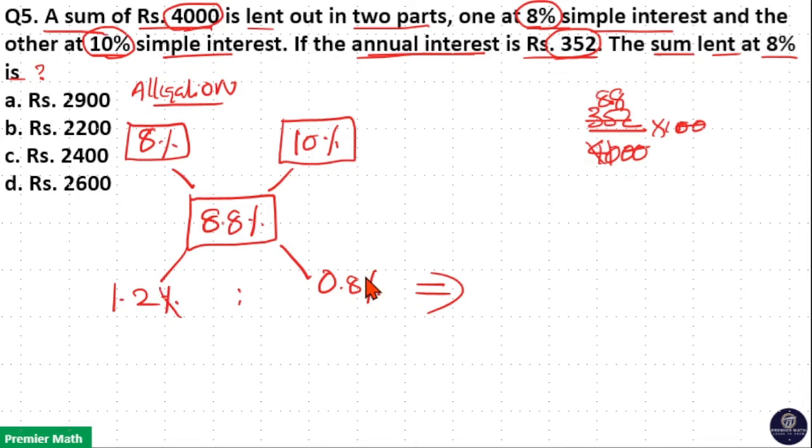Percentage, percentage cancel, point and point cancel remaining as 12 is to 8. 4 goes 3 times in 12, 4 goes 2 times in 8. That means 3 is to 2 is the ratio of sum of money lent at 8% and 10% respectively.